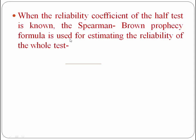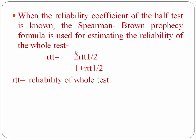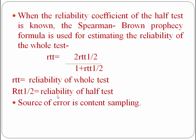When the reliability of the half test is known, the Spearman-Brown prophecy formula is used for estimating the reliability of the full test. The formula is: reliability of full test equals 2 multiplied by reliability of half test, divided by 1 plus reliability of half test. Here, RTT is the reliability of the full test and r is the reliability of the half test. The source of error in this method is content sampling.